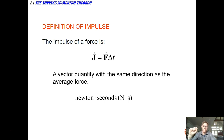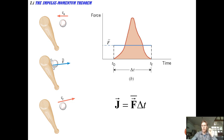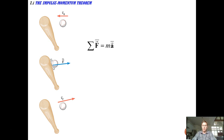Looking at the units: impulse is force in newtons times seconds. Since newtons are kg·m/s², one of those seconds cancels, leaving kg·m/s — the exact same units as momentum. So the units for impulse and momentum are identical. Graphically, impulse is actually the area under the force-versus-time curve, but we'll deal with it as an average force.